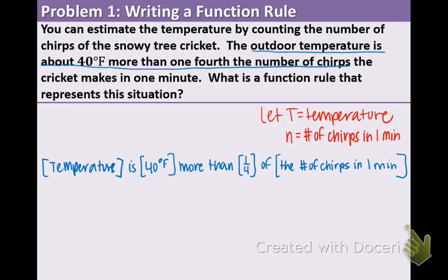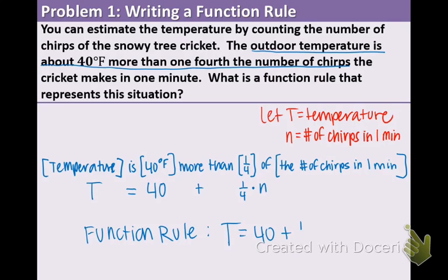This graphic organizer comes from the key sentence that we underlined. Now let's fill in our variables. T stands for temperature. Is translates to equal sign. 40 degrees comes down. More than means we are adding. One-fourth comes down. Of means we're multiplying. And the number of chirps in one minute is represented by n. So our equation or our function rule for this situation is T equals 40 plus one-fourth n.